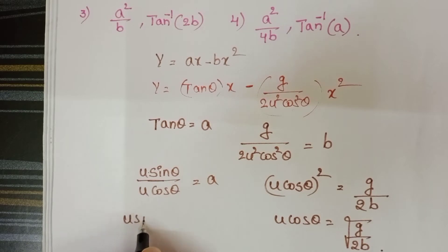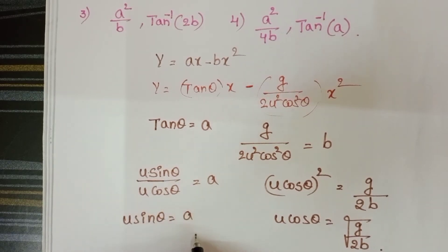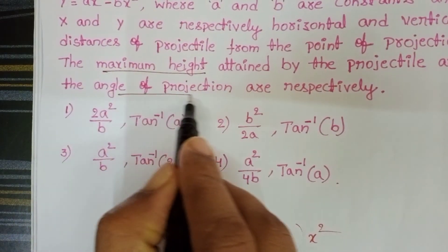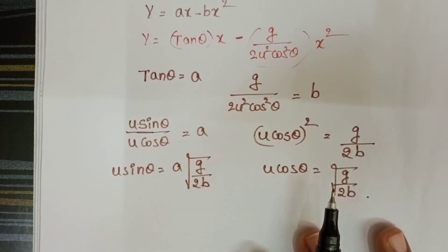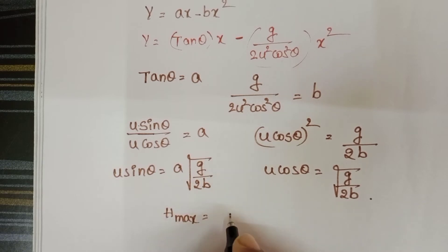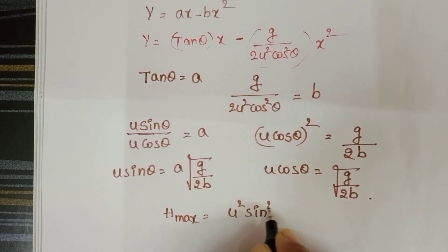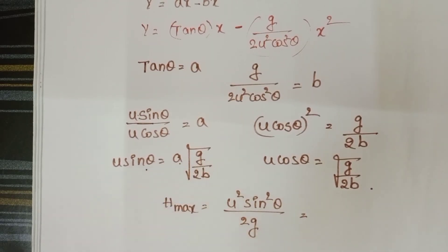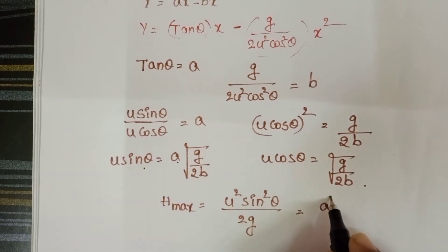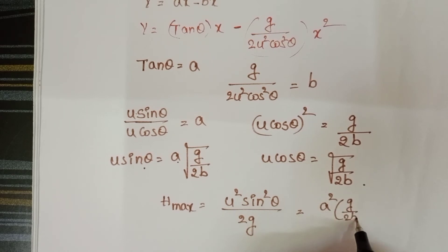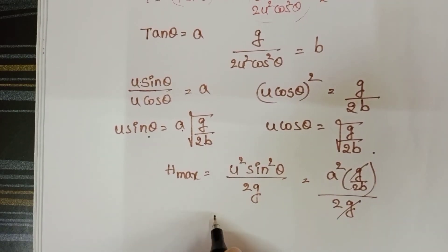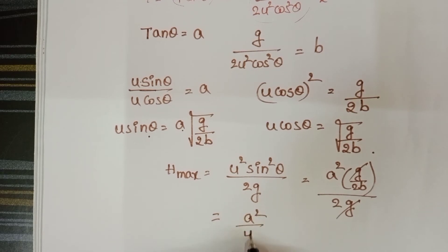From this, u·sinθ = a × √(g/2b). The maximum height formula is H_max = u²sin²θ / 2g. Substituting u·sinθ = a√(g/2b), we get u²sin²θ = a² × g/(2b), and dividing by 2g, the g cancels. Therefore, maximum height H_max = a²/4b.